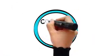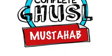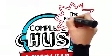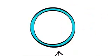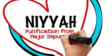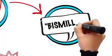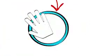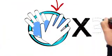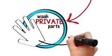As for the complete ghusl — this is the mustahab one, and it is how the Prophet (sallallahu alayhi wasallam) took a bath. Begin with an intention to purify yourself from the major impurity, then say Bismillah, wash your hands three times, then with your left hand wash your private parts and anywhere else that is contaminated with traces of impurity.